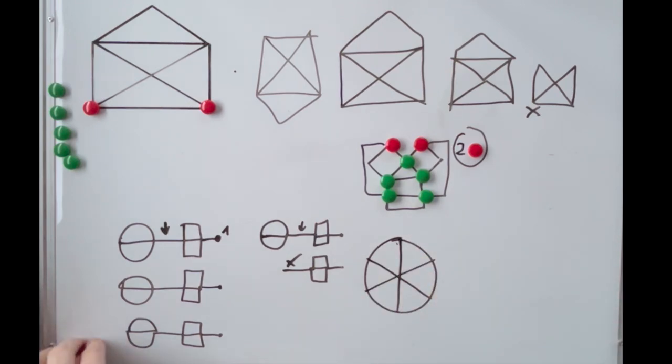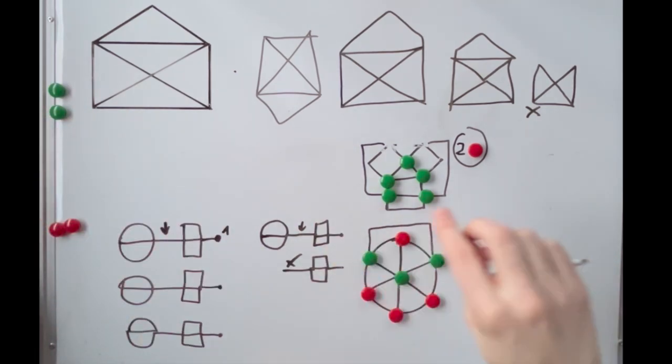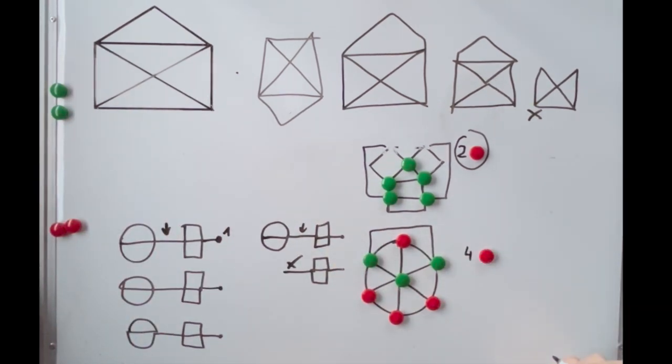And what if there are too many odd nodes, say six? Connect two of them with a line to turn them into even nodes. Now there are only four odd nodes left. So repeat this procedure, leaving only two odd nodes, and you'll have a nice shape ready to be drawn.